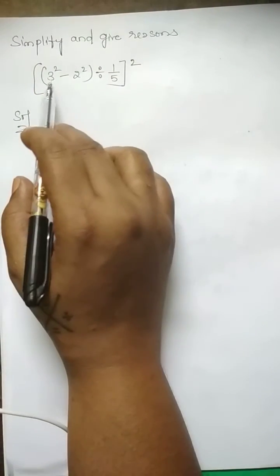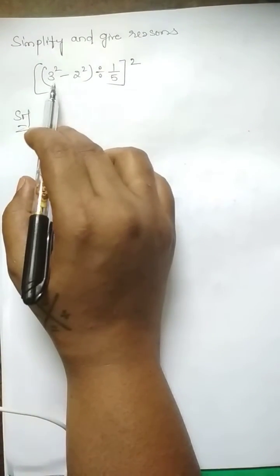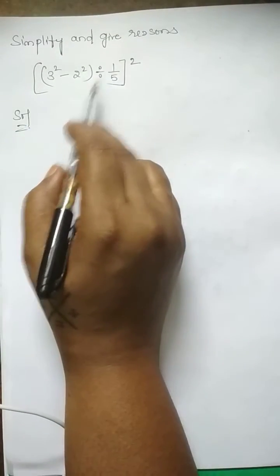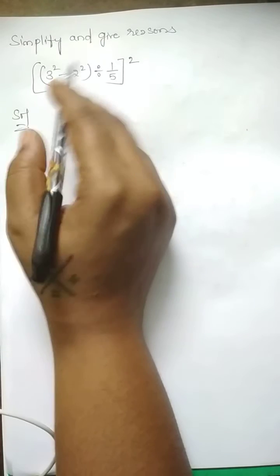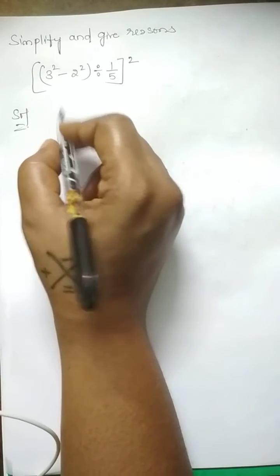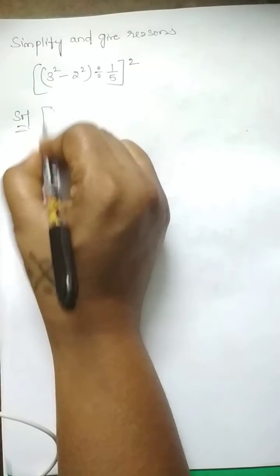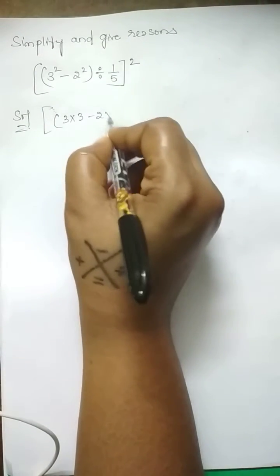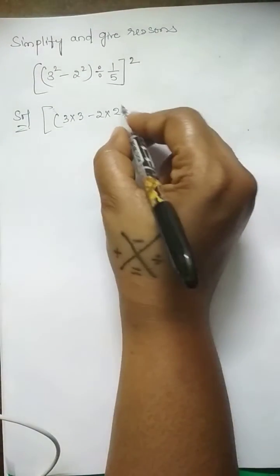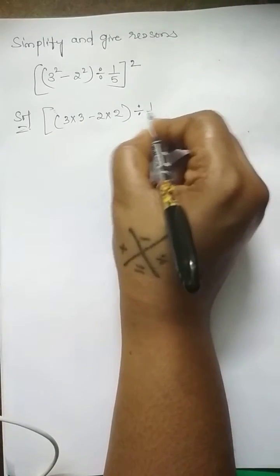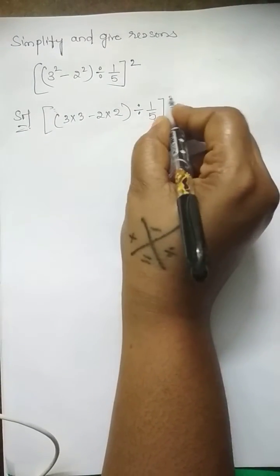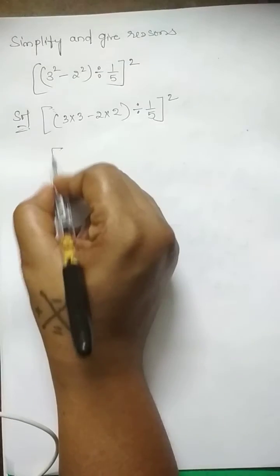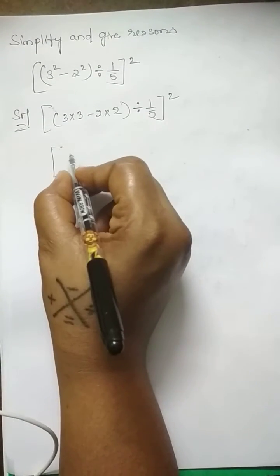Simplify and give reason. Here the problem is 3 squared minus 2 squared divided by 1/5 whole squared. So 3 squared, how we can write 3 squared? 3 squared is 3 into 3 minus 2 into 2. 2 squared is 2 into 2 divided by 1/5 whole squared.